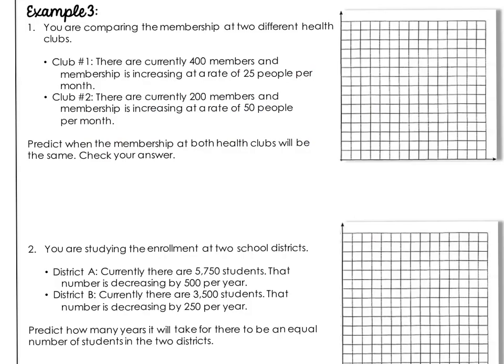Let's do some real-world problems that involve predictions — systems are often used for predictions, so this is a good application. When doing a graph like these, you need to have your X and Y — independent and dependent variables — defined, with a constant interval and constant rate on both axes; otherwise your predictions won't be in the right spot. You're comparing the membership at two health clubs: Club 1 has 400 members increasing at a rate of 25 people per month, and Club 2 has 200 members increasing at a rate of 50 people per month.